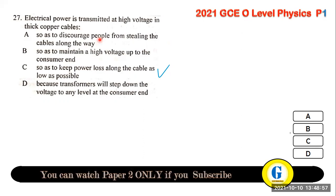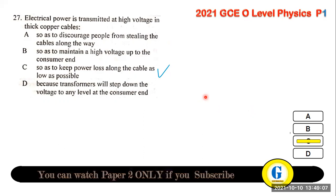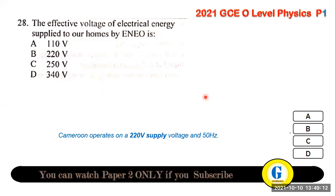Question 27: electrical power is transmitted at high voltage to minimize heat losses — that is, to minimize power losses as much as possible.